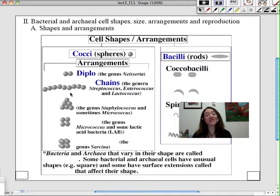This is indicative of cells that divide repeatedly in a single plane. Some cells will divide repeatedly in random planes, in multiple planes, and then we get an arrangement that looks more like a grape-like cluster. This is more indicative of genera like staphylococcus and micrococcus. Sometimes this is called the staphylo arrangement, but being cautious with that because micrococcus can also form that arrangement.